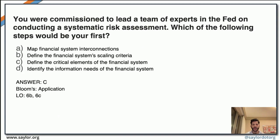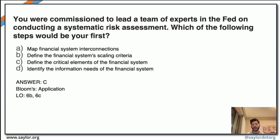This question positions you as an expert commissioned by the Fed to conduct a systemic risk assessment. It asks about the very first step you would take. From among the different options, the first thing you want to do is define the critical elements of the financial system. The answer is C. Recall what we studied in Unit 6 to understand the different steps associated with conducting a systemic risk assessment.